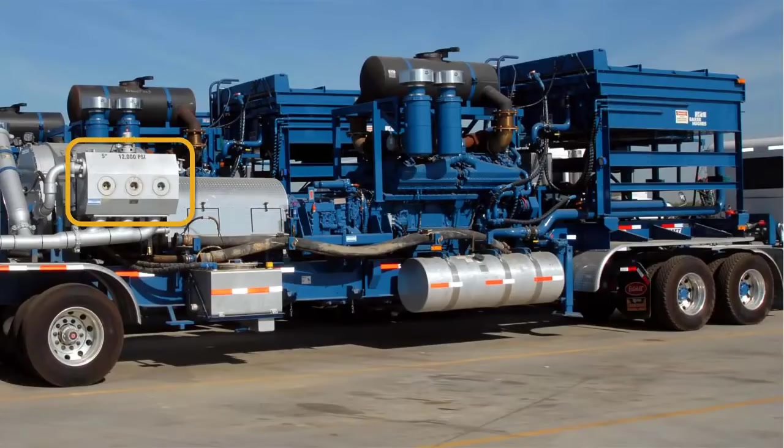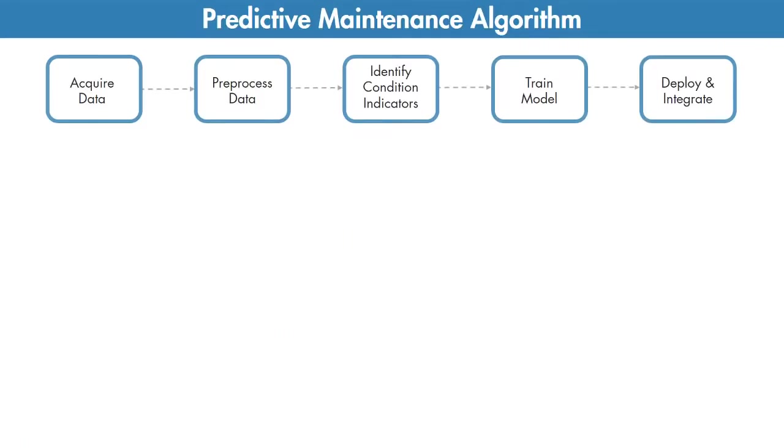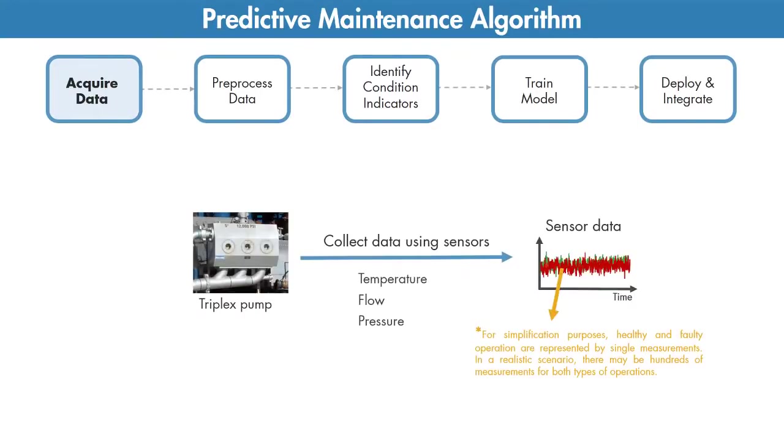This is a triplex pump commonly used in the oil and gas industry. Let's use this to walk through the predictive maintenance algorithm. The first step is to collect a large set of sensor data representing healthy and faulty operation. You also want to make sure that you collect this data under different operating conditions.